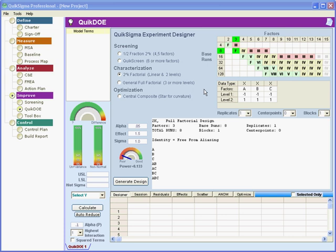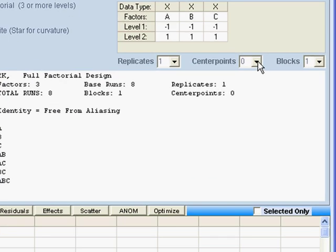When we design a 2 to the k factorial experiment, we have the option of adding center points. Now typically, and for reasons that are beyond what we can go into here, you'll add about three to six center points, and the purpose of that is to test the assumption of linearity.